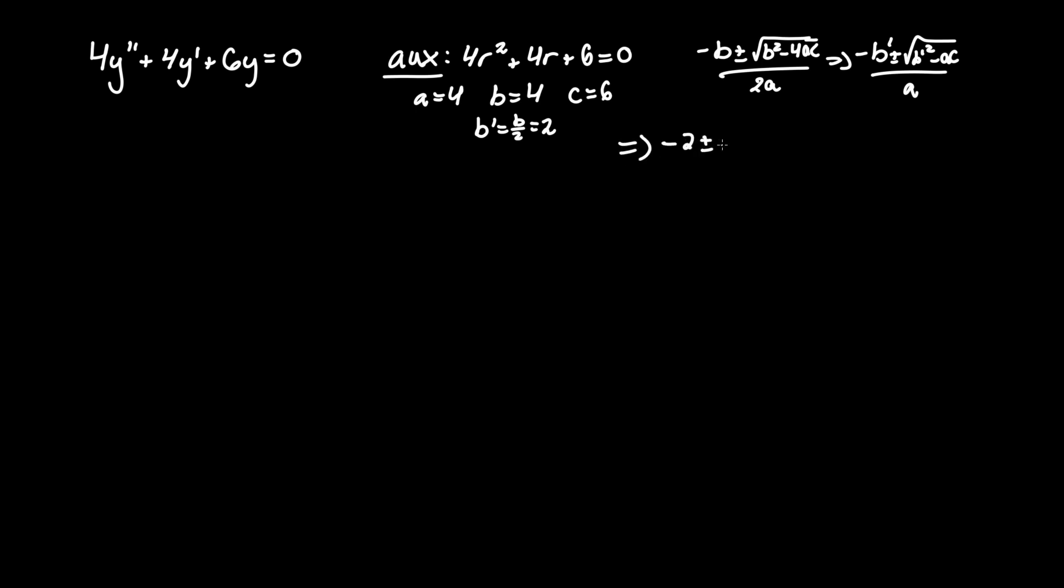And we can plug that into the shortened formula, where it's -2 ± √(2² - 4×6) / 4. You can plug it into the normal formula, just with a, b, and c, and it'll do the same.